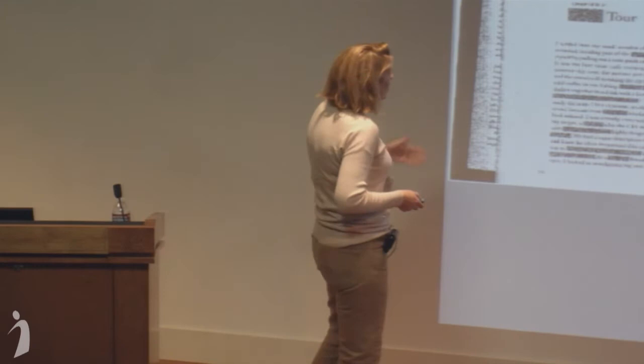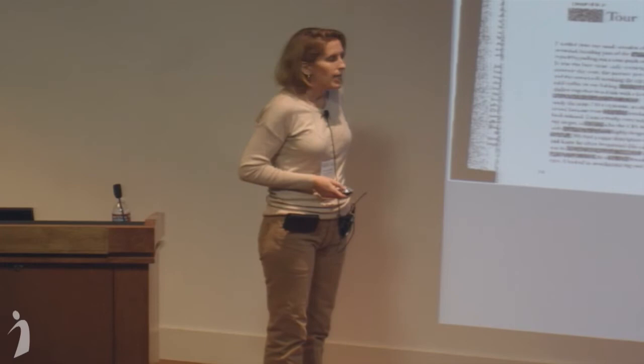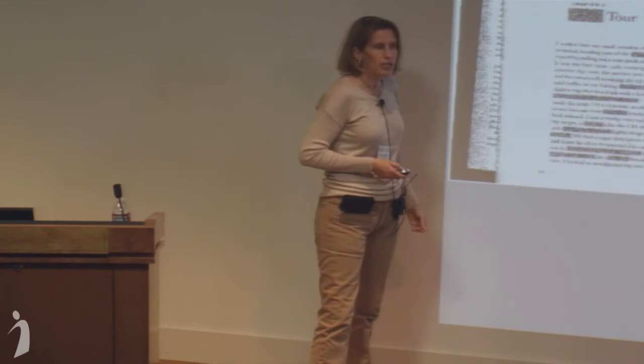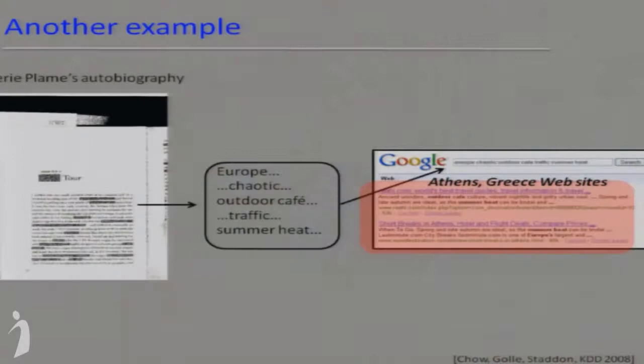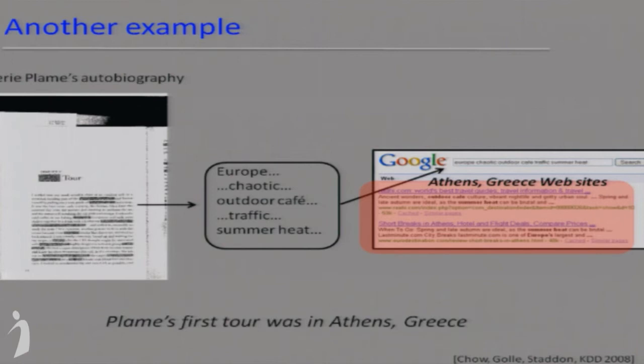Another example: a shot of Valerie Plame's biography. Plame was a covert CIA operative whose identity was leaked. The CIA redacted chunks of her book, including about her first tour of duty. We can't immediately tell where the tour was, but she mentions it being very hot, being in Europe, complaining about traffic. When those keywords are entered into a search engine, the top two results were for Athens, Greece — which is indeed where her first tour of duty was.